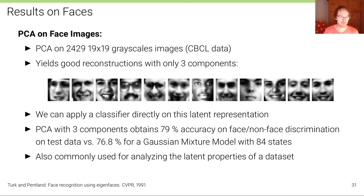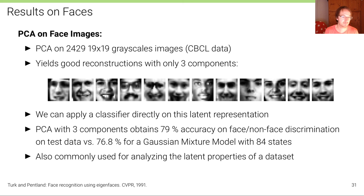PCA can also be applied to face images if they are well curated — all cropped to the same size, looking very similar — and you can get pretty good reconstructions with only three components. We can also take this PCA low-dimensional embedding and classify in that latent space: train a classifier on the training set in the latent space, apply the same transformation to test samples, and classify. This is very efficient because of the much smaller dimensional space. PCA with three components obtains 79% accuracy on face/non-face discrimination, while a Gaussian mixture model with 84 states provides even slightly lower performance.